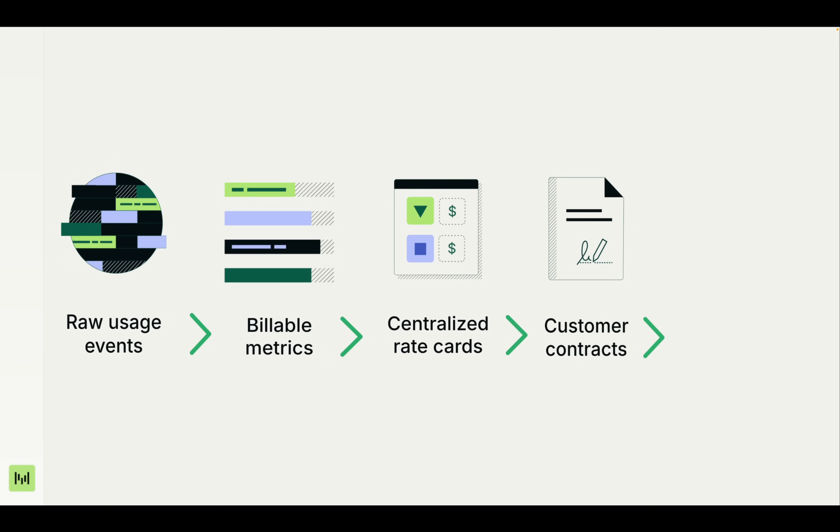So no more manual updates. Contracts inherit from the rate card with any custom terms layered on top. And then finally, you get clean invoices that reflect exactly what happened — from raw data to revenue automatically, and it all happens in real time.